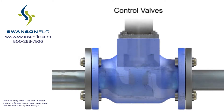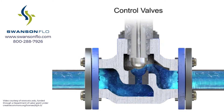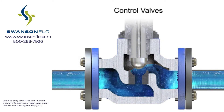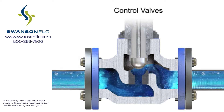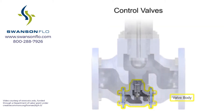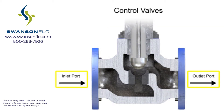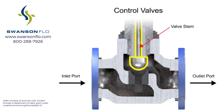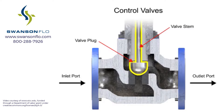Control valve actuators control fluid in a pipe by varying the orifice size through which the fluid flows. Control valves contain two major components: the valve body and the valve actuator. The valve body provides the fluid connections and a movable restrictor comprised of a valve stem and plug that is in contact with the fluid that varies the flow. The valve actuator is the component that physically moves the restrictor to vary the fluid flow.